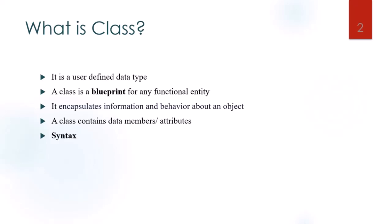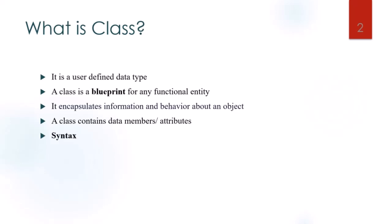Let us see the syntax of how to declare the class. The class definition always begins with the keyword class followed by the class name. The class body contains the variables and the functions, which are called the class members. The variables declared inside the class are called data members and the functions are called member functions.